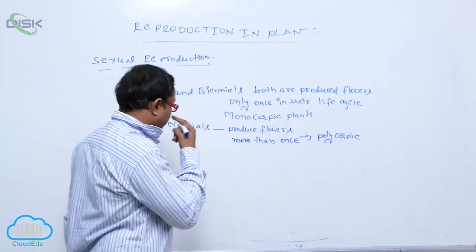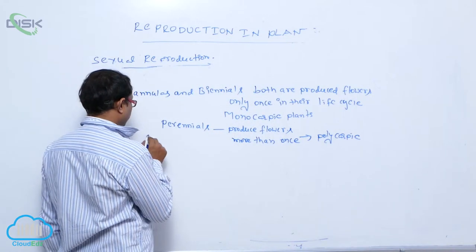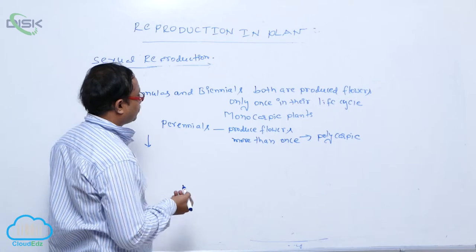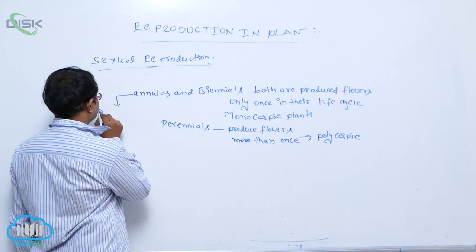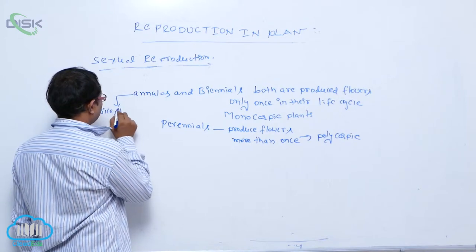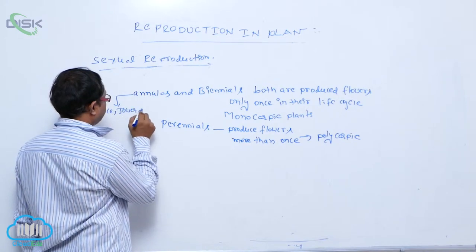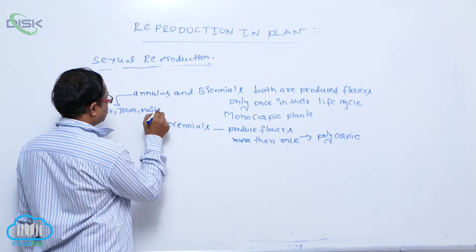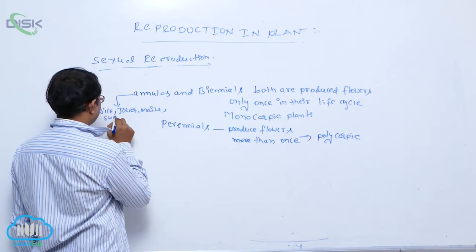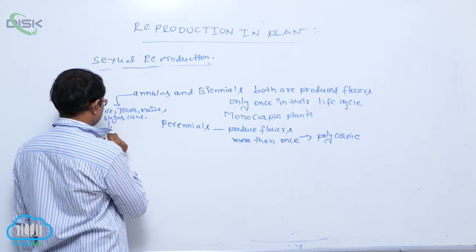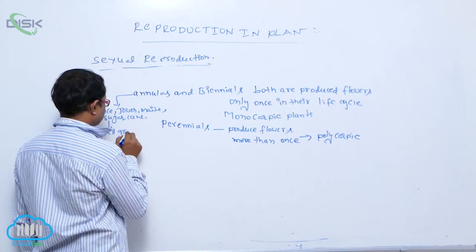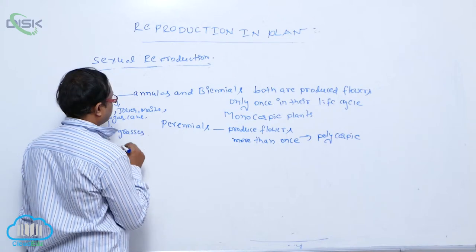Some perennials also show this. What are the annuals and biennials? For example, in the annuals: rice, jowar, maize, sugarcane. All the grass plants, all grasses, they are annuals.